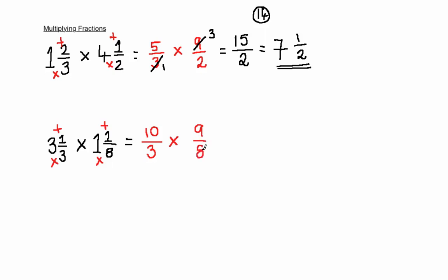Now this is a little bit more complicated than the first example, because there's lots of cancelling that can be done. Initially, we can cancel the 10 and the 8 down — both these numbers divide by 2. 10 divided by 2 is 5, and 8 divided by 2 is 4. Similarly, we can divide the 3 and the 9 by 3: 3 divided by 3 is 1, and 9 divided by 3 is 3. Now we can multiply across: 5 times 3 is 15, and 1 times 4 is 4.